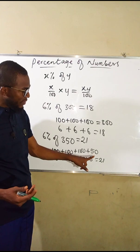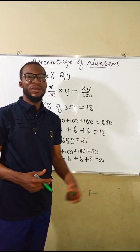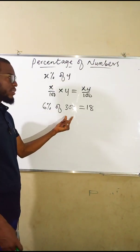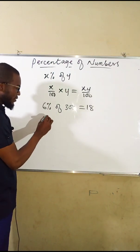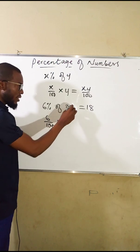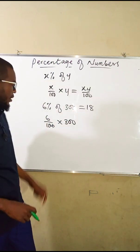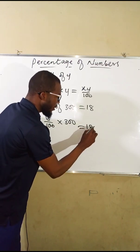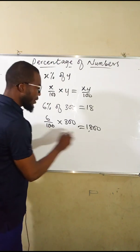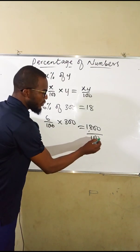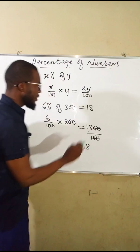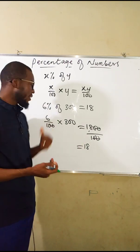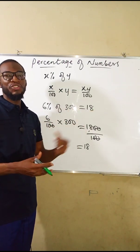What if the remaining part is not a factor of 100? The general form is to just multiply directly. Six percent of 300 can be expressed as six over 100 — meaning six out of 100 — multiplied by 300. Six times 300 is 1800, divided by 100. The two zeros cancel and we get 18. So whatever percentage of any number you are asked to find, just express that percentage as a fraction and multiply by the required number.